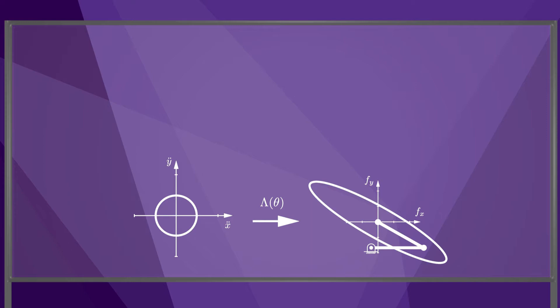First of all, the directions of the force and the endpoint's acceleration are only aligned if the force is aligned with the principal axis of the ellipse, as you see here. To accelerate the endpoint in this direction, you need a lot of force. To accelerate the endpoint in the orthogonal direction, you need much less force.